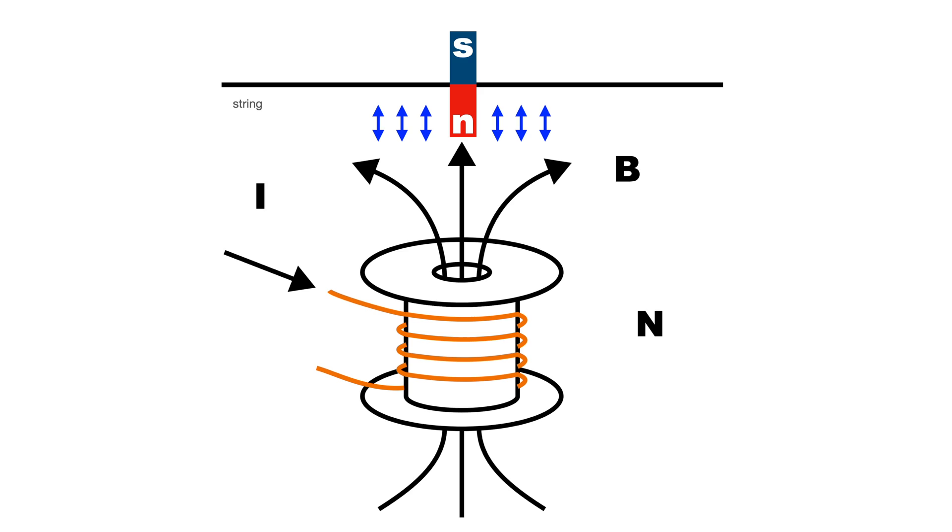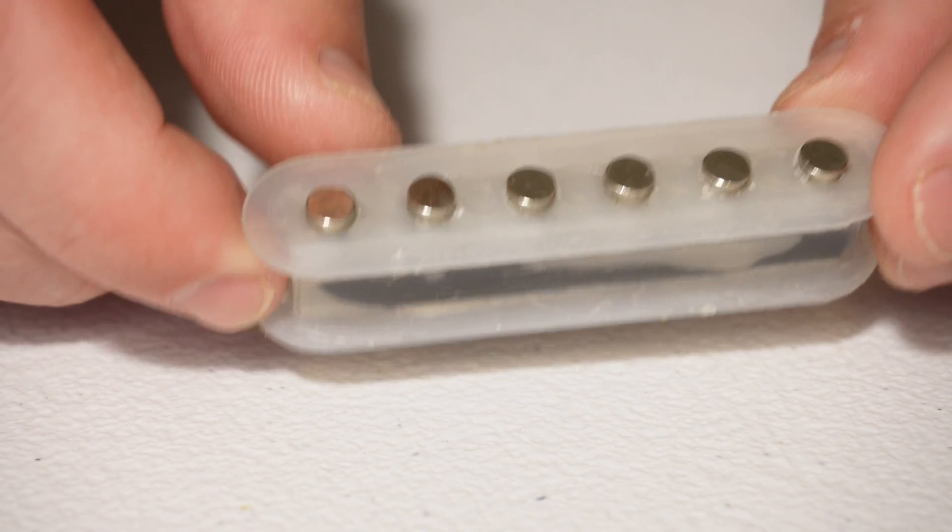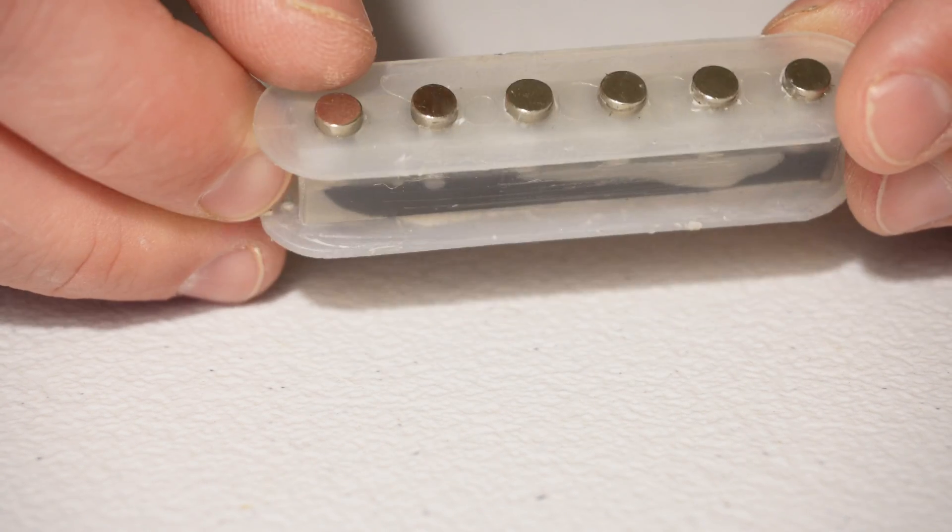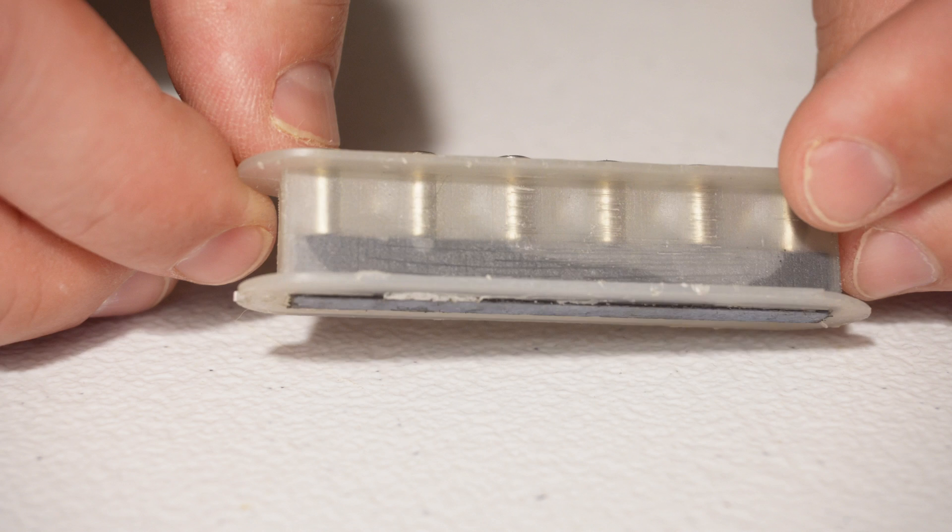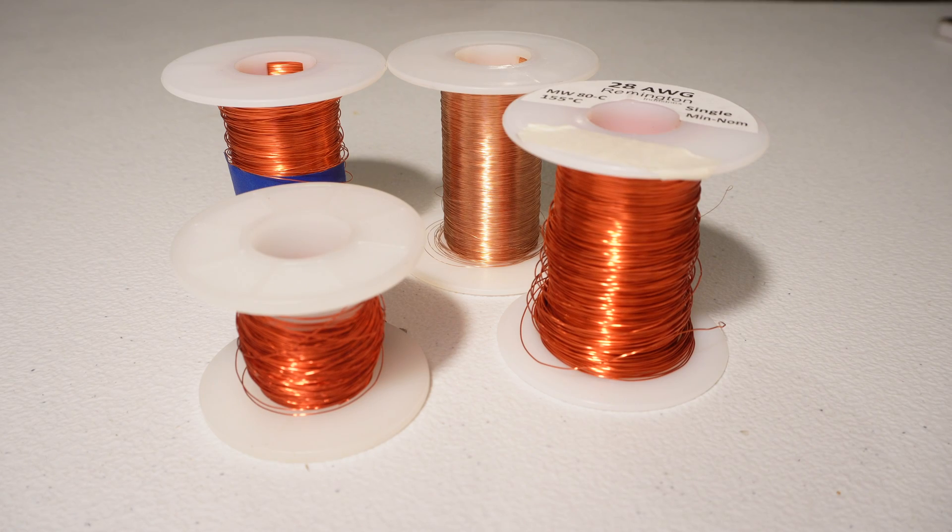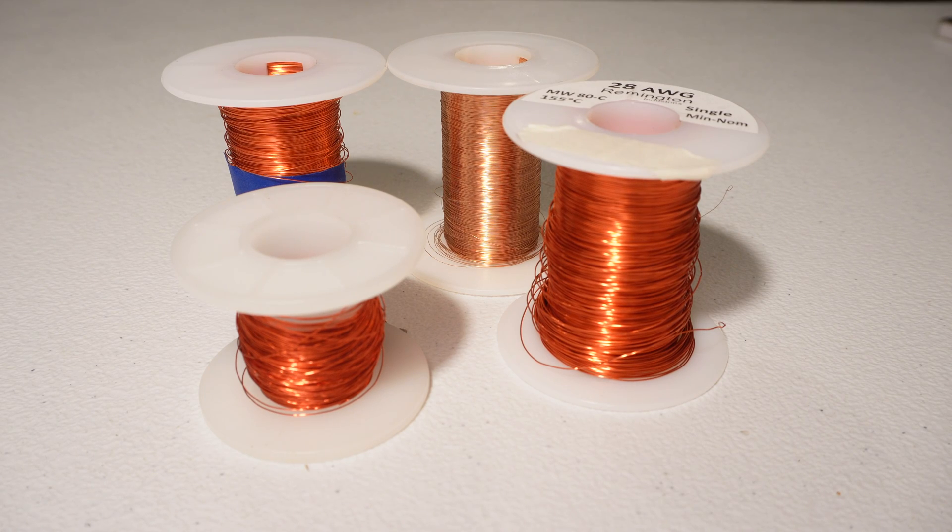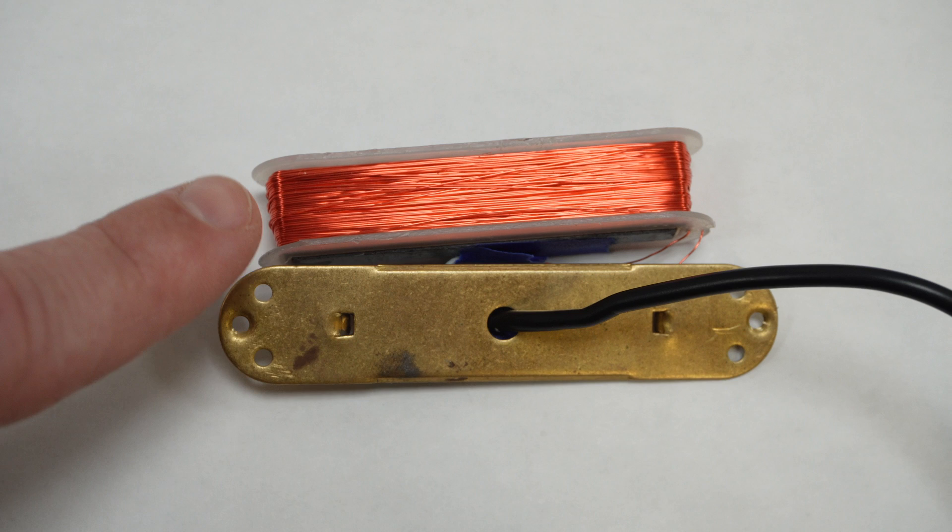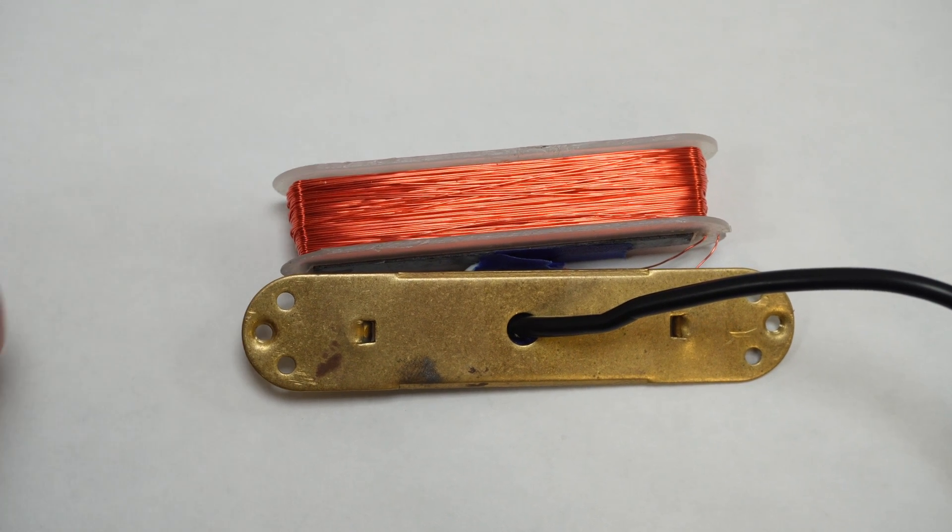And the first question I have is that if I just have a given bobbin, like say I just have a guitar pickup with the wire removed, what diameter wire should I use to fill it back up with and should I fill it all the way or should I only fill it part way.